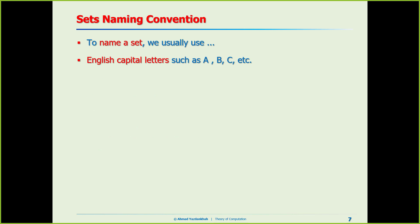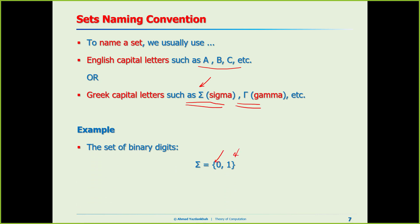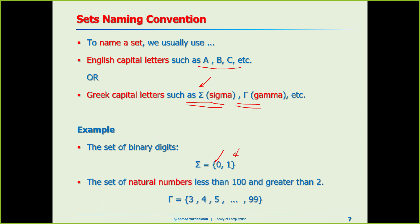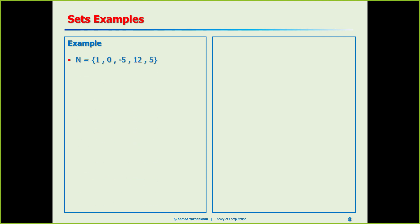How can we name a set? Usually we use capital letters from English or Greek. In this course, we will be using Sigma and Gamma a lot. For example, Sigma equals {0, 1}. Another example: the set of natural numbers between 2 and 100, not including the endpoints. Other examples include sets like {train, bike, airplane, bus}, {x, y, z}, or binary numbers.